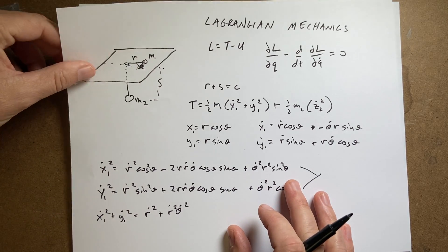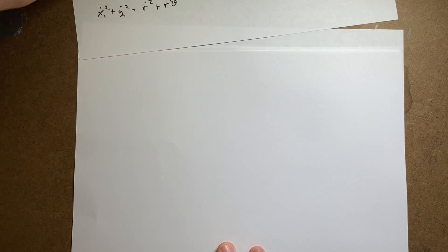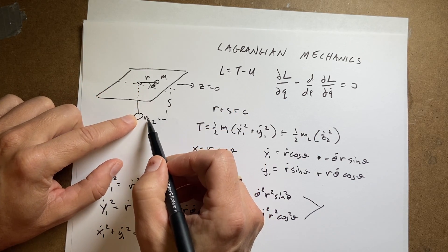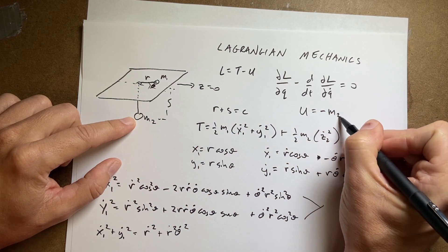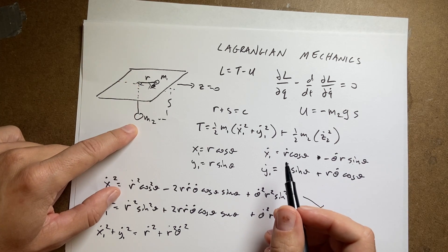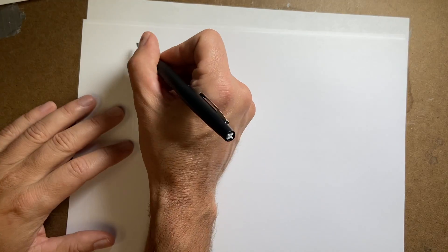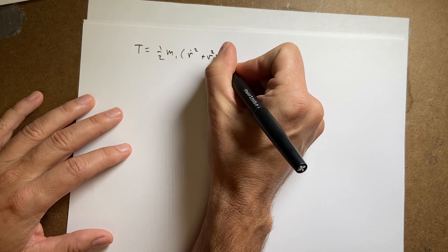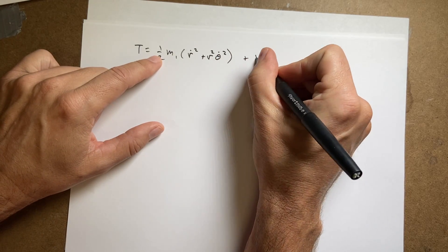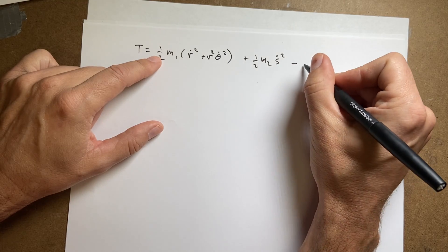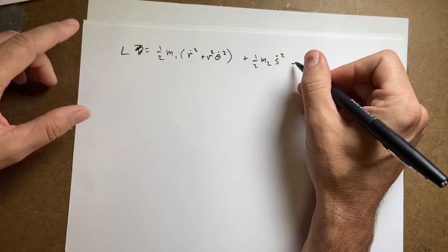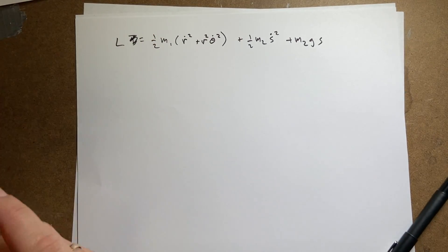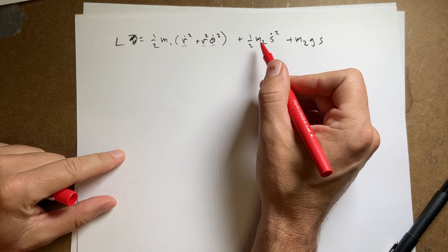Let's write down the kinetic and potential energy in terms of these variables. For the potential, let's call the table level z equals zero, so U equals negative m2 g s, since s is the distance below. So T equals one-half m1 times (r-dot squared plus r squared theta-dot squared) plus one-half m2 s-dot squared. The Lagrangian L equals T minus U, so L equals one-half m1 (r-dot squared plus r squared theta-dot squared) plus one-half m2 s-dot squared plus m2 g s.